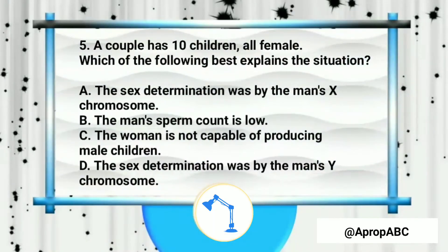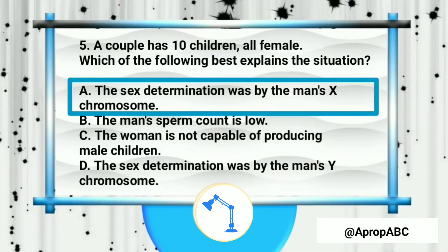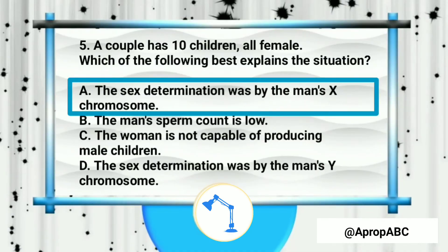The answer is that sex determination was by the man's X chromosome — yes, because the man released X instead of Y. If he had released Y, all children would have been male. Since all were female, he released X. It is not due to the woman's inability to produce male children, as some people incorrectly assume.